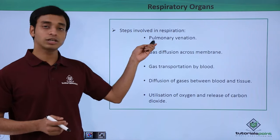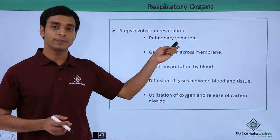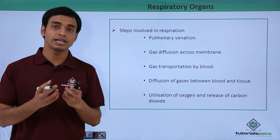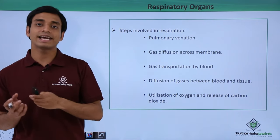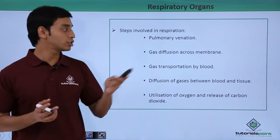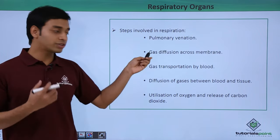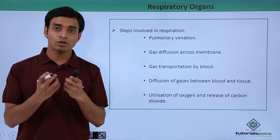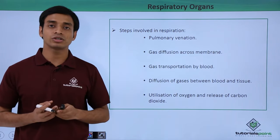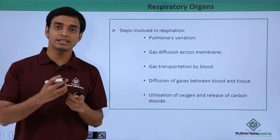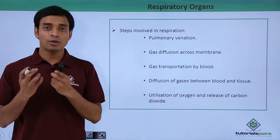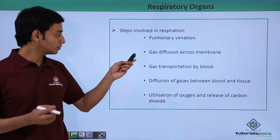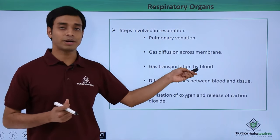The steps involved in respiration are as follows. The first step is pulmonary ventilation, which includes the inhalation of air — oxygen is taken into the blood and carbon dioxide is expelled out. Next, gas diffusion across the alveolar membrane occurs: oxygen diffuses into the blood and carbon dioxide is expelled out through the nostrils.